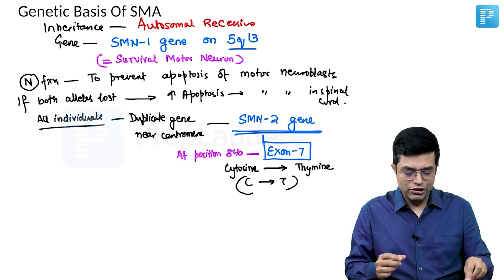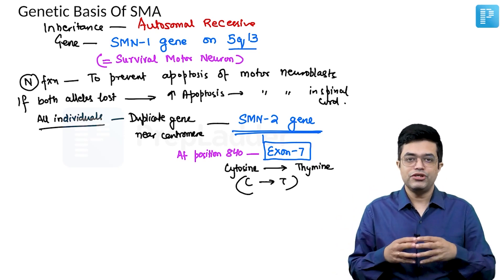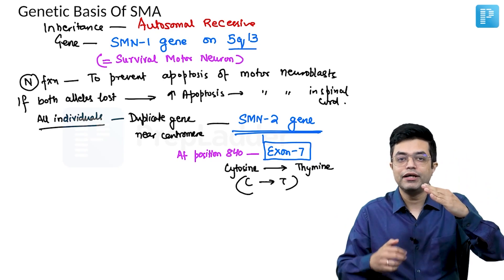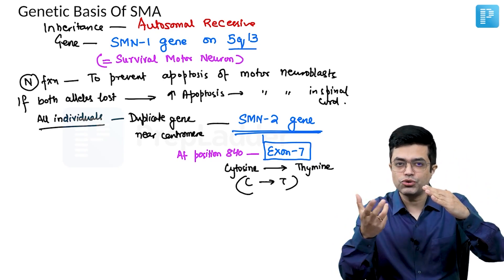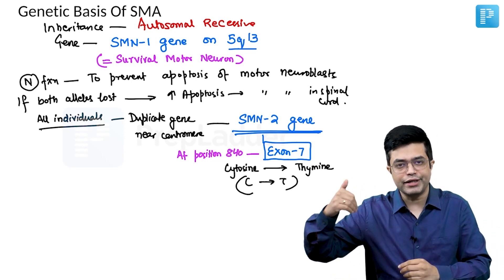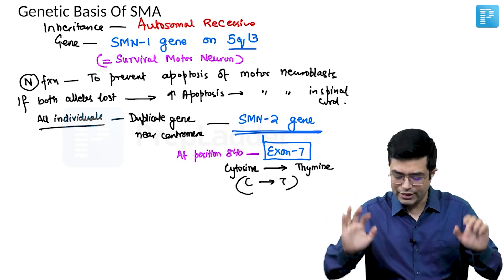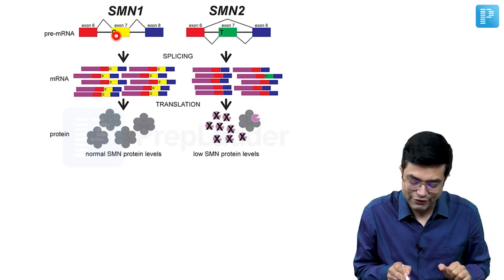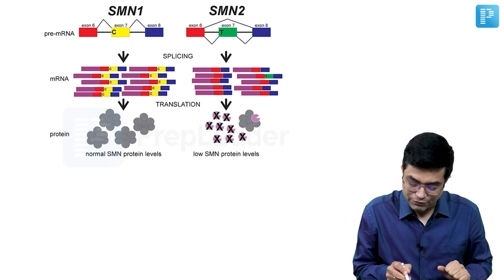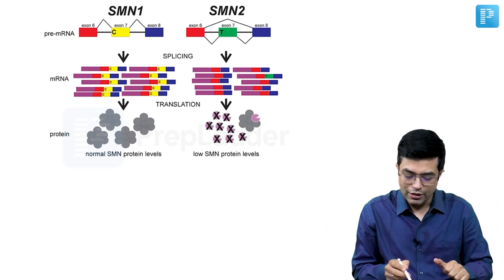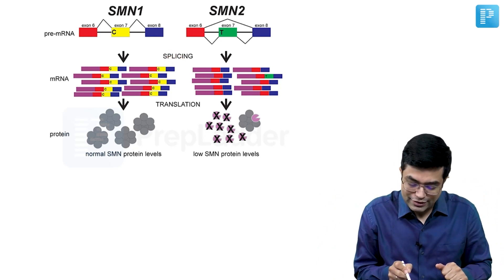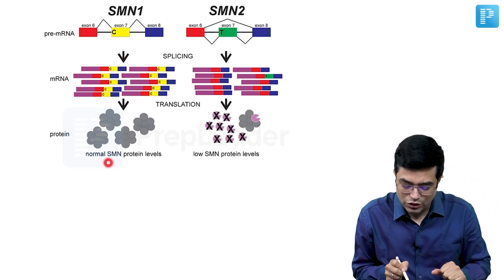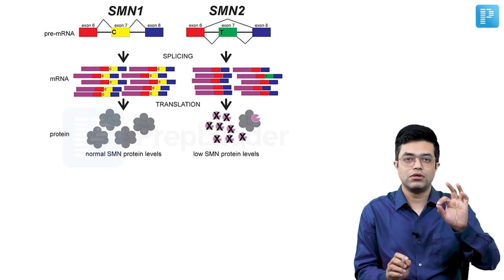You know that there is a process. Initially, what happens during protein formation? Initially from DNA there will be formation of pre-mRNA. This pre-mRNA will undergo splicing by spliceosomes to form the mature mRNA. This mature mRNA will form the protein. This is the normal process. Look at this process, what is happening? Let us look at first SMN1. Look at exon 7. Exon 7 is having cytosine residue. This process of pre-mRNA normally formed in both SMN1 and SMN2, but when the process of splicing happens, this SMN1 is normally, the splicing happens normally, and a very stable protein called normal SMN protein levels are found.